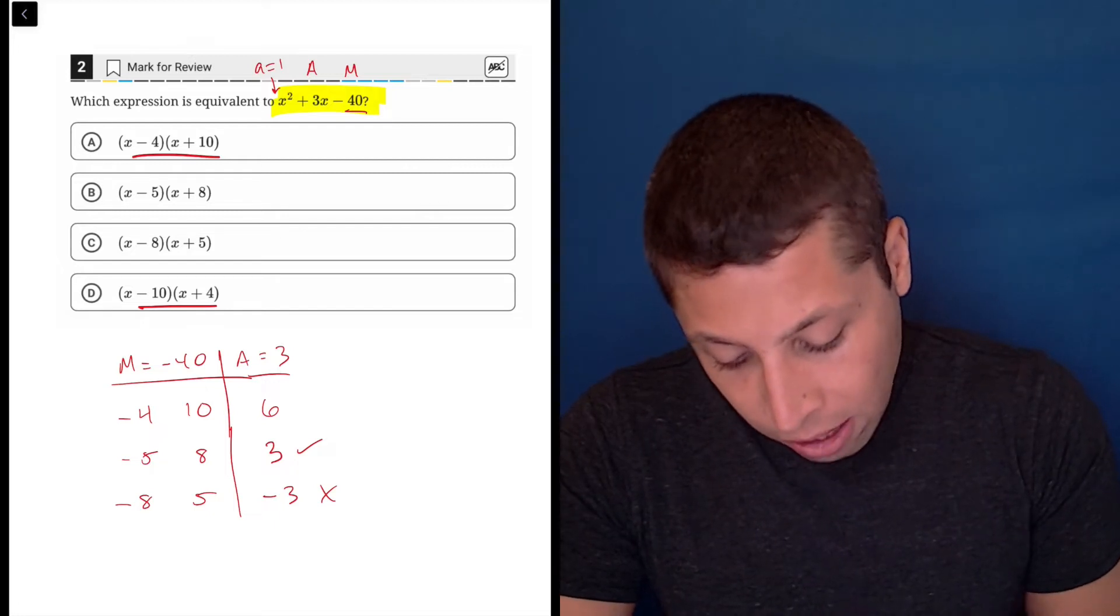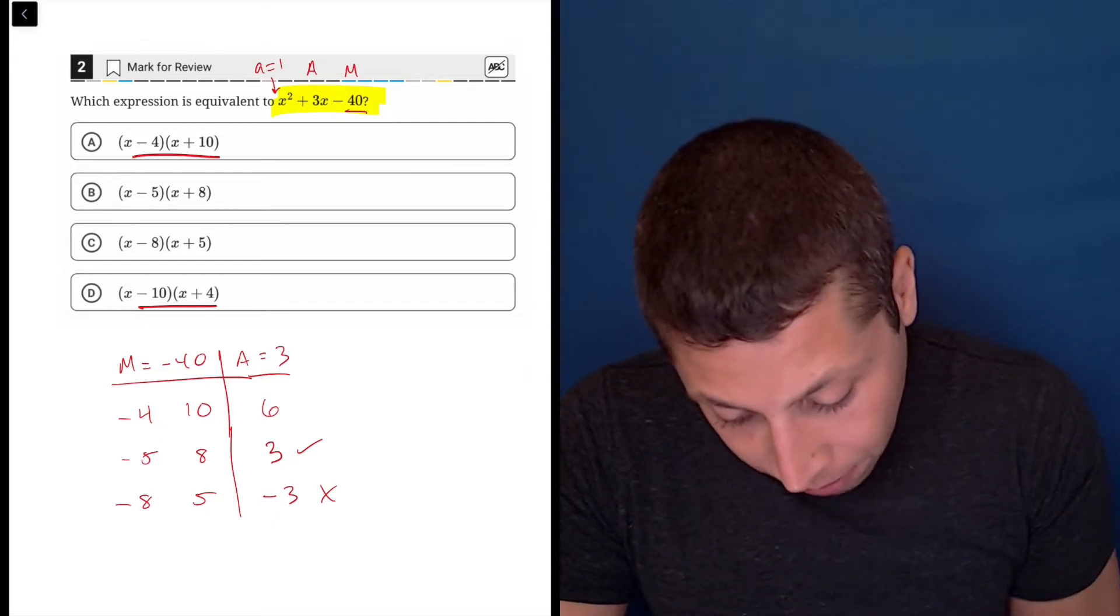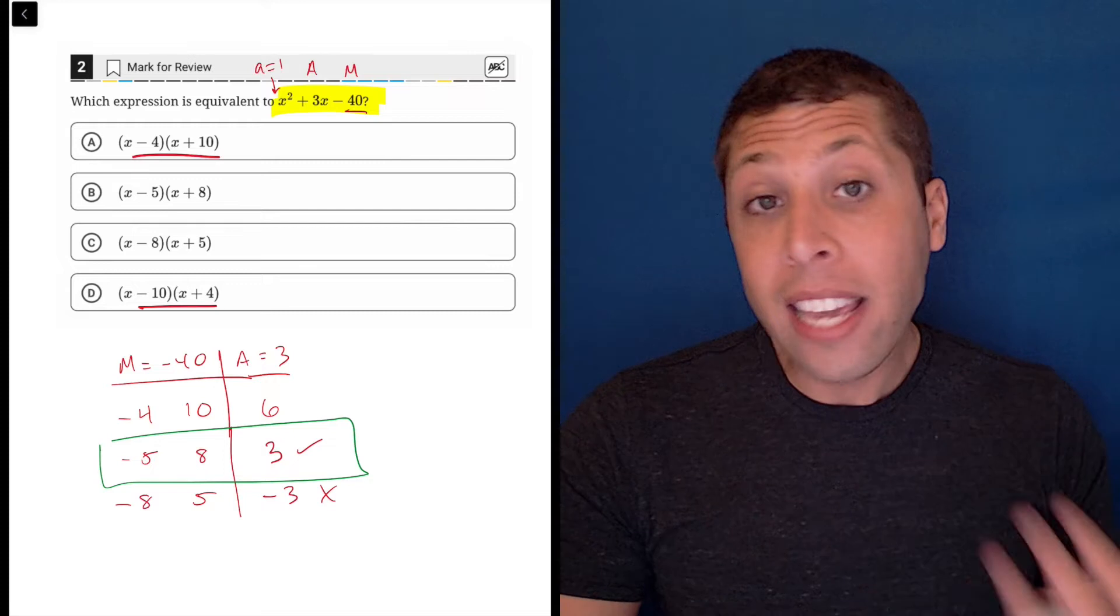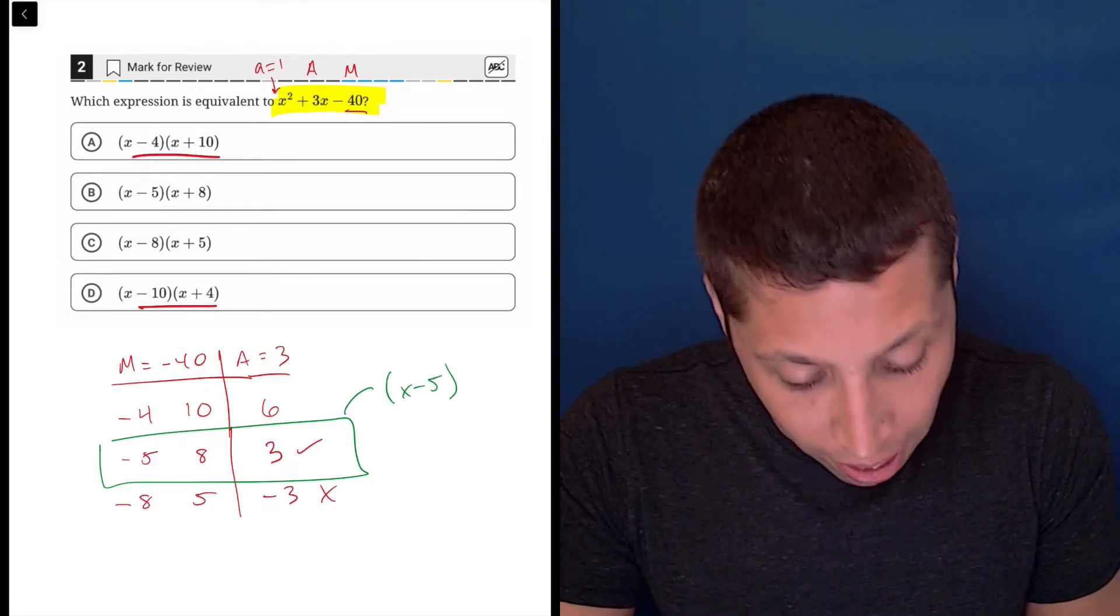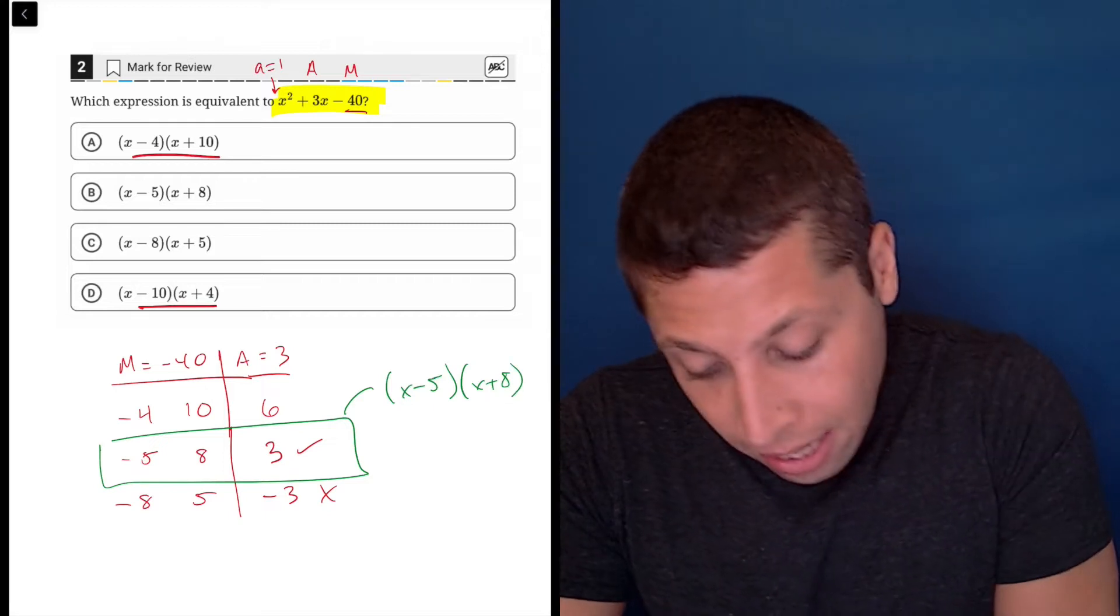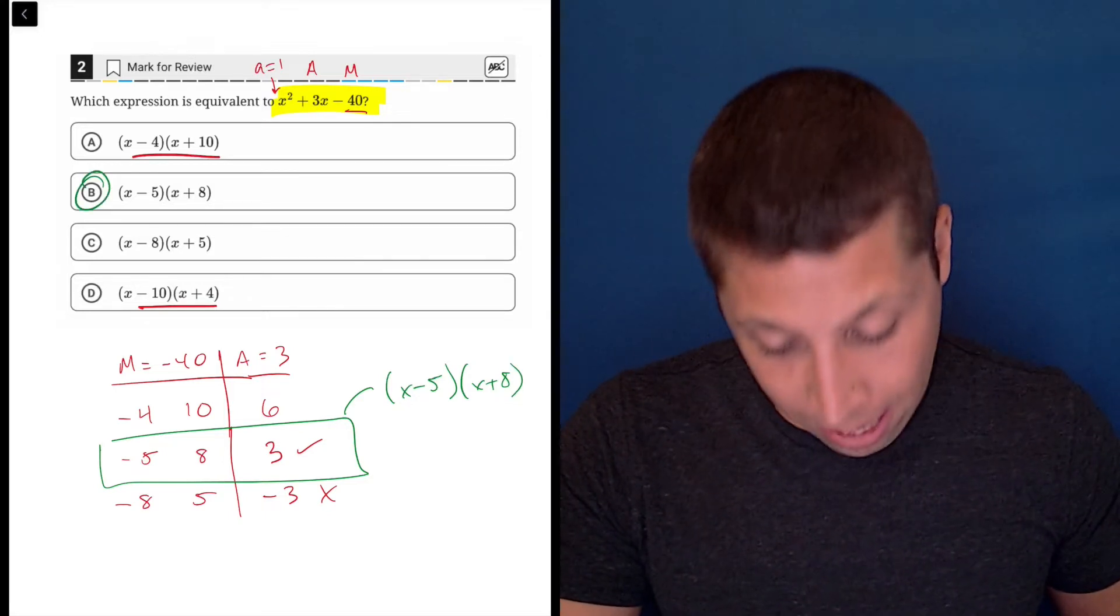So these two numbers here in this row are just taken as the factor. This is going to come out and give us x minus five times x plus eight, which is choice B, which is the answer.